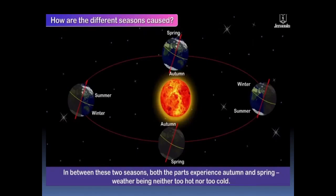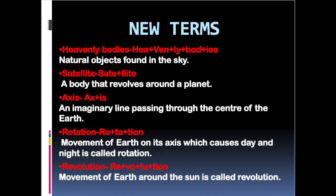Let's revise some of the new terms that we have learned in this chapter. Heavenly bodies: natural objects found in the sky. Satellite: a body that revolves around a planet. Axis: an imaginary line passing through the center of the earth.